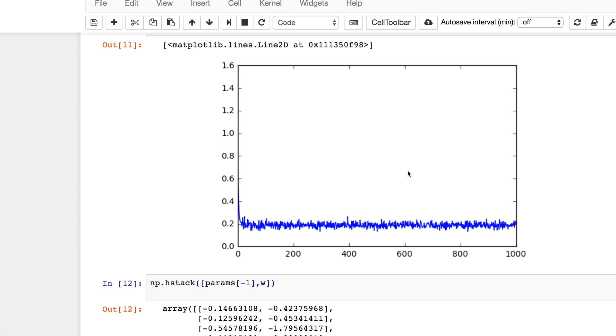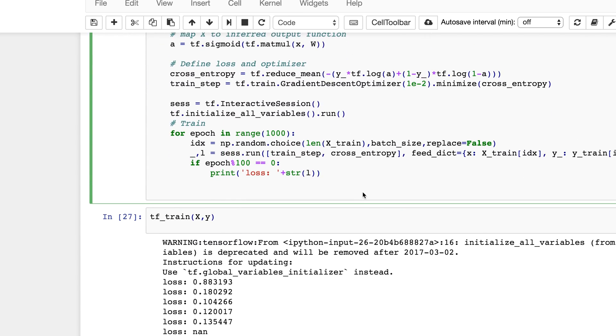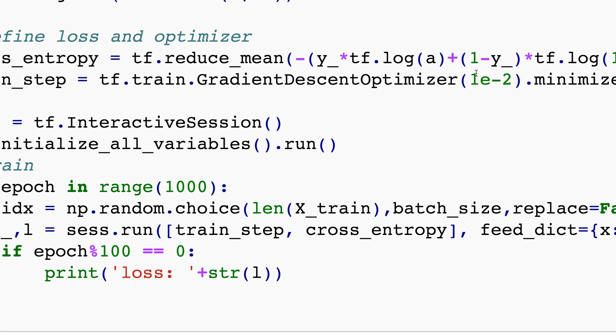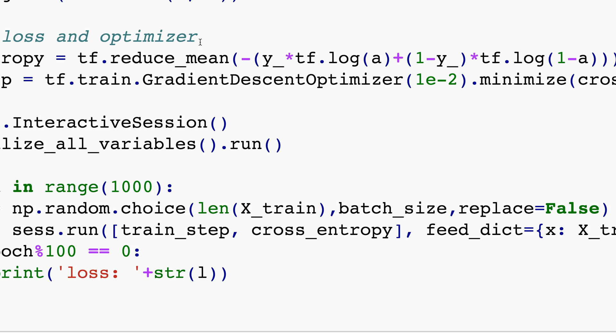So what I've done is written down the cross entropy loss. So y multiplied by log of a, 1 minus y multiplied by log of 1 minus a, and then we're going to be taking the average of all that. You don't need to worry too much, it's reduced because it's just a reference to map reduce, but it's just take the average.